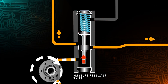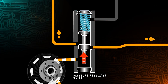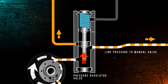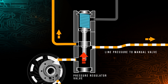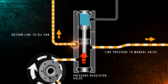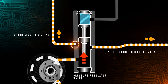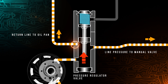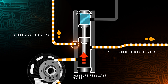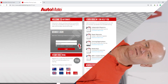As the pressure in the system builds, fluid acting on the valve causes the spool to slide in its bore, compressing the spring. The valve continues to move until a return port is uncovered, allowing some fluid to flow back to the oil pan, therefore maintaining a constant pressure within the system.